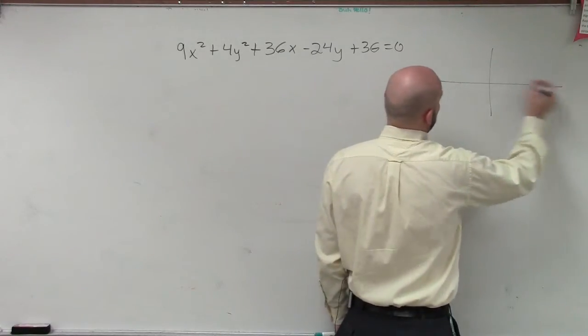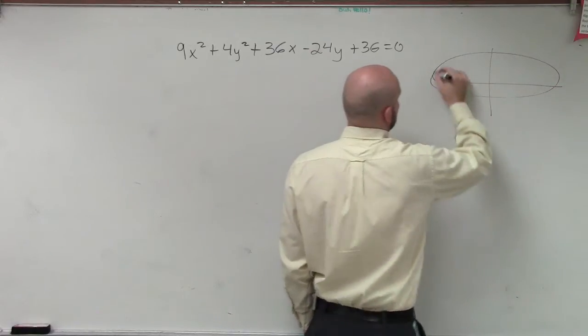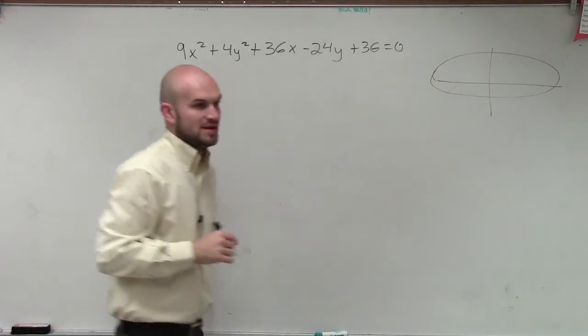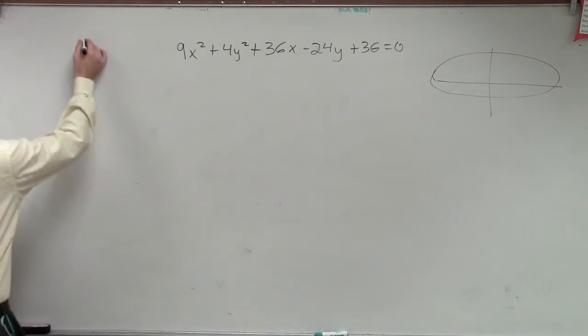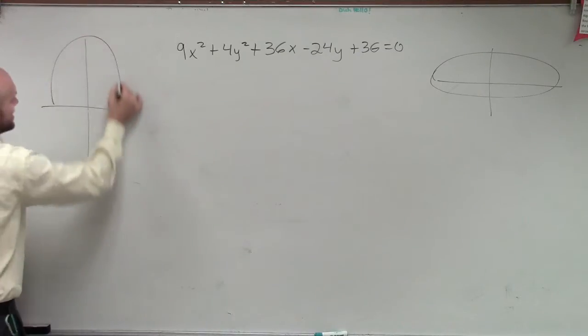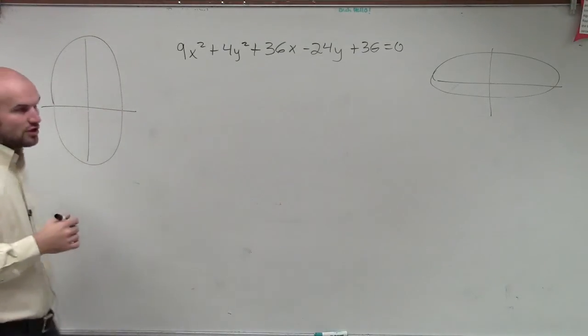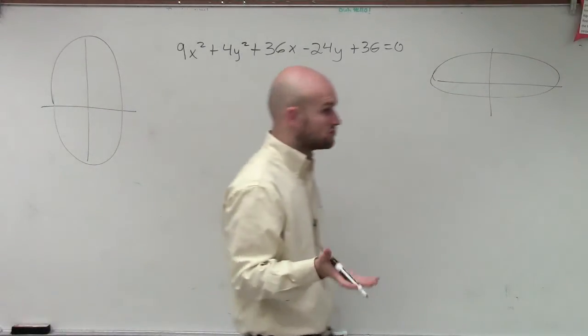For this ellipse, we know it can either be an ellipse with a major axis that's horizontal, or we can have an ellipse where the major axis is vertical. It's one of our two options.